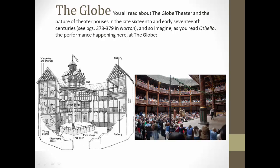This is the modern-day Globe — someone decided, I think it was 1949, to try to replicate the original Globe, and so that's what this building is. You can see all the people arrayed up here in the more expensive seats, and this area is for the audience that stands — this is where the commoners would be. Here is the stage itself, and you can see that there are people on all sides of the stage, on both sides and the front, so they can see pretty much from all views except for the back.